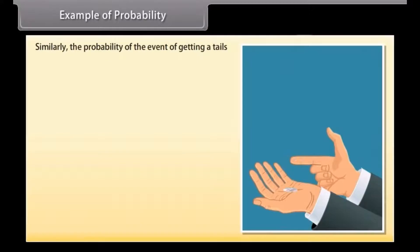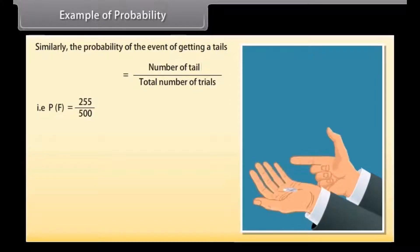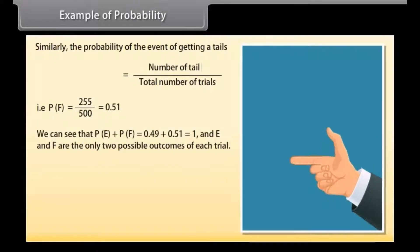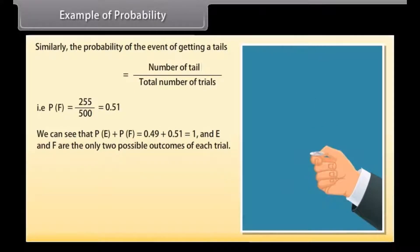Similarly, the probability of the event of getting a tail: P(F) = 255 upon 500 = 0.51. We can see that P(E) + P(F) = 0.49 + 0.51 = 1, and E and F are the only two possible outcomes of each trial.